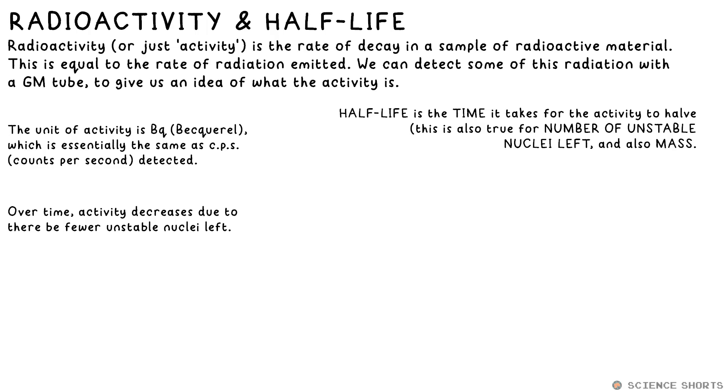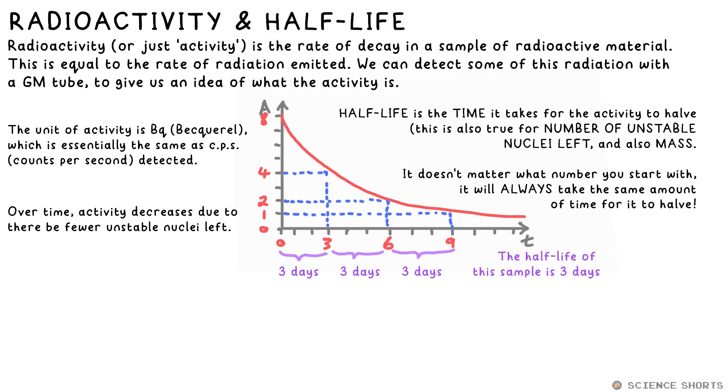Half-life is what we call the time it takes for both of these to half. The half-life of a radioactive isotope could be days, months, even millions of years. If we draw a graph to show how activity changes over time, it will look something like this. So how do we find the half-life from this? Well, we take the initial number and we halve it, then draw a line to the curve to see how long that took. What's interesting is that if we do the same again from that number, it will take the same amount of time to half. It doesn't matter how much of the isotope you have, or when you start timing, it will always take the same amount of time to half.